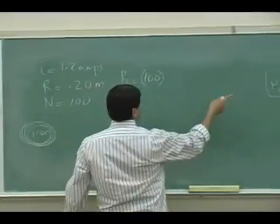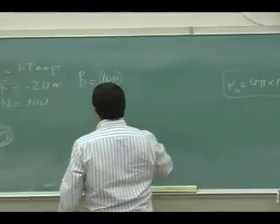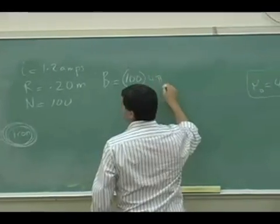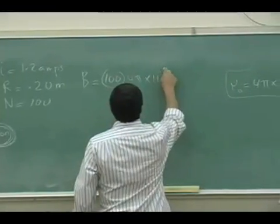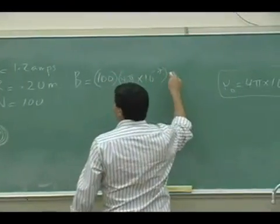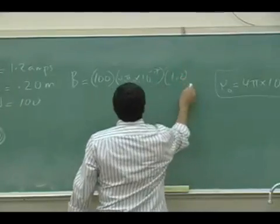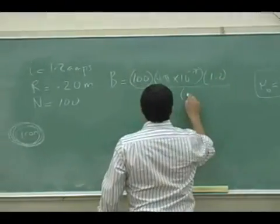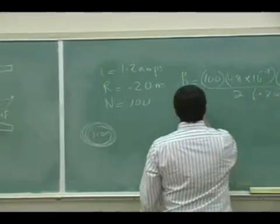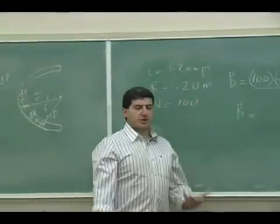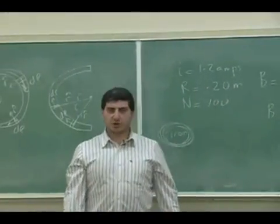Okay, so let's calculate this for free air. You have 4π times 10 to the minus 7, the current is 1.2 amps divided by 2 times the radius 0.20, just to get a ballpark feeling for what is the strength of that.